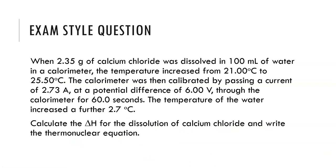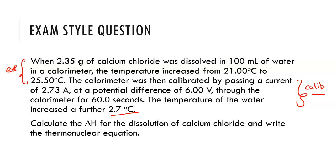Now another question — hopefully you're feeling confident with these. We have 2.35 grams of calcium chloride dissolved into 100 mils of water. The temperature increases from 21 to 25.5 degrees and the calorimeter is calibrated by passing a current. In this case, the experimental information is given first and the calibration information second. You're going to take the current, voltage, and time with the temperature change to work out your calibration factor, and then work out the calcium chloride energy from the change in temperature at the start. This is very similar to the first one we did — have a go and come back and check your answer.